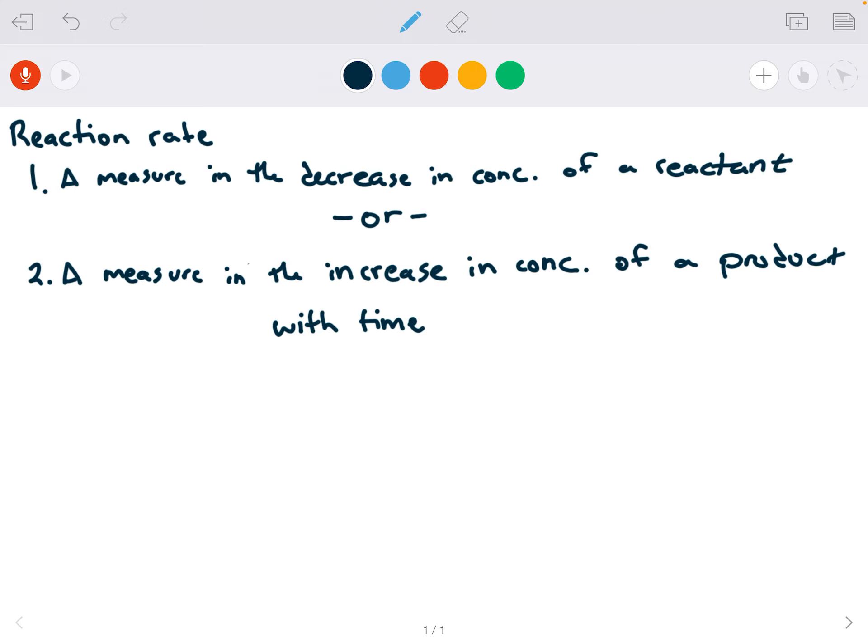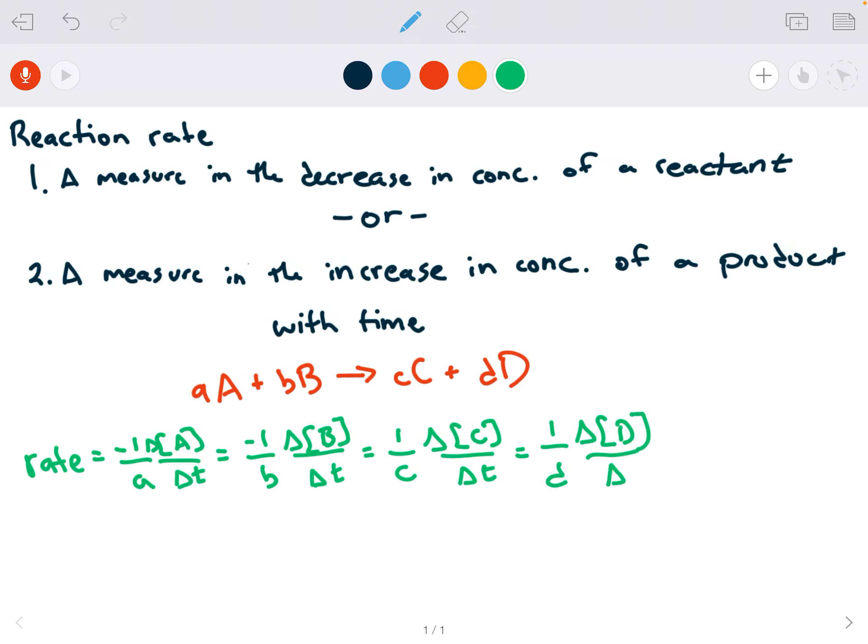Now taking this qualitative definition into a quantitative equation for rate, using the generic reaction aA plus bB yields cC plus dD, you would get the following equation. The rate equals negative 1 over a times the change in concentration of A with time, equals negative 1 over b times the change in concentration of B over time, equals 1 over c times the change in concentration of C over time, and 1 over d times the change in concentration of D over time.